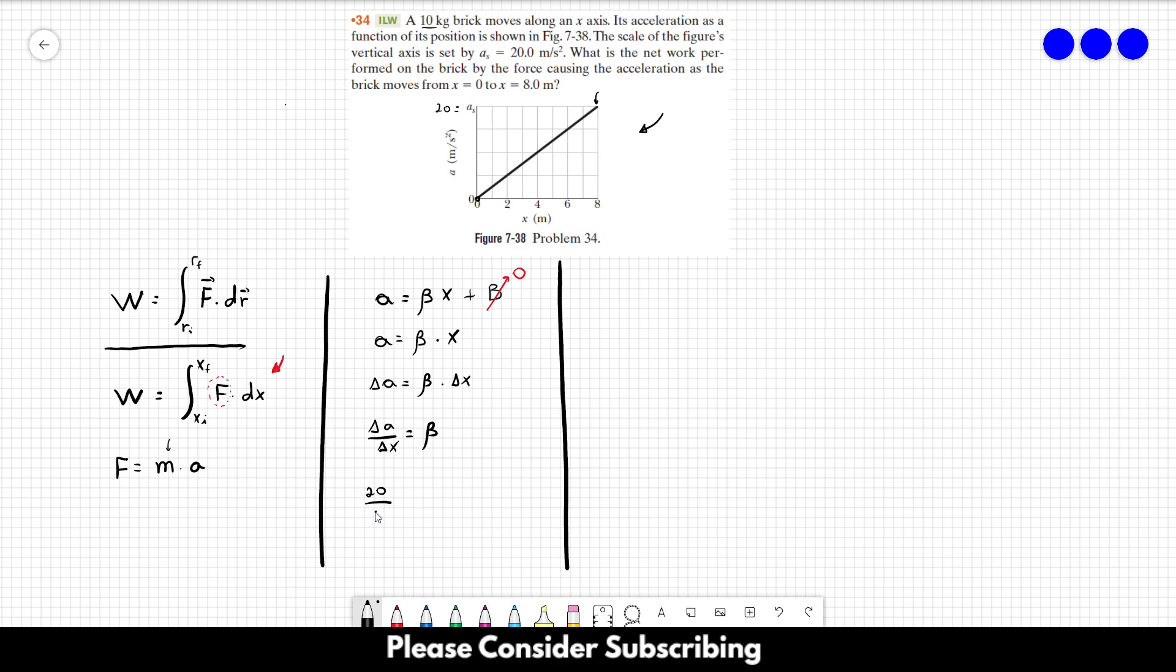So it will be 20 over 8, which equals beta. So beta is equal to 2.5. If you want to get a maximum score in this problem, you probably want to add the unit here for beta. The easiest way to figure out the unit of beta is just take the unit of those numbers. This is 20 meters per square second, and you are dividing by 8 meters. So this gives us 2.5, 1 over s squared, because you cross out the meters. So beta equals 2.5 per second squared.